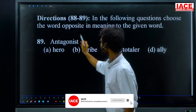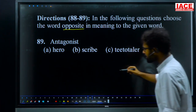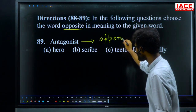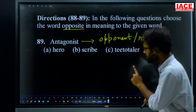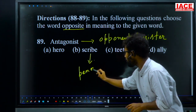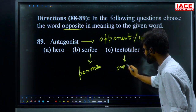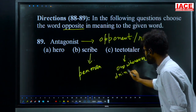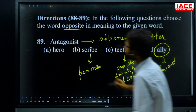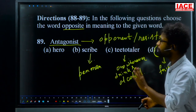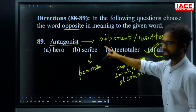Question 89, antonym of 'antagonist.' Options: hero, scribe, tito taler, and ali. 'Antagonist' means opponent or resistor. 'Scribe' means one who writes. 'Tito taler' means one who never drinks alcohol. 'Ali' means friendly or friend. Since an antagonist always opposes and a friend never opposes, the antonym is 'ali.' For question 89, option D — ali — is the answer.